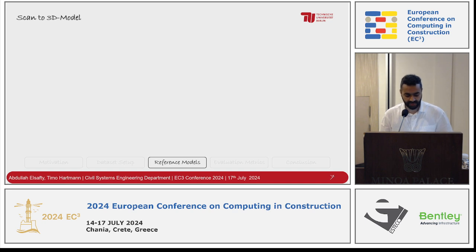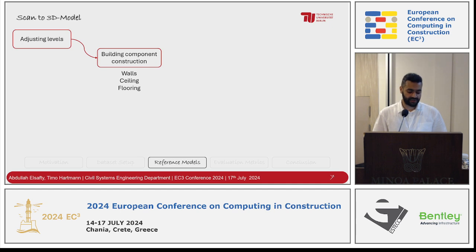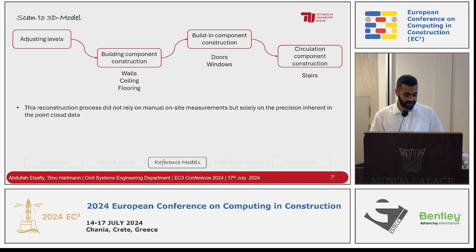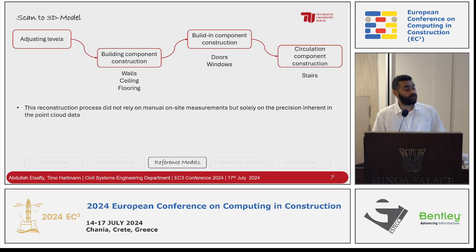How do we build this model? We use the traditional scan-to-BIM technique: first we have a point cloud, we import it into Revit, adjust levels, then construct building components like walls, ceiling, and floor, followed by doors and windows, and finally stairs if the dataset contains them. One thing to highlight: some people use on-site measurements to verify model accuracy, but we didn't do this — we relied only on the accuracy of the point cloud from the device.